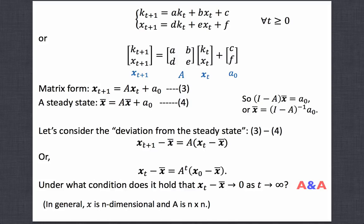The result is x_{t+1} minus x-bar = A times (x_t minus x-bar). If you multiply A to the current deviation, you get the next deviation. In other words, if you multiply A^t to the initial deviation, you get the date-t deviation. We have a very intuitive expression. The next question is: under what condition does this deviation converge to 0, that is, under what condition does x_t converge to steady state x-bar?